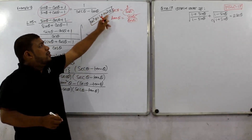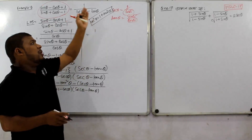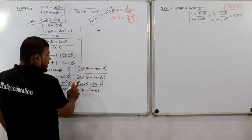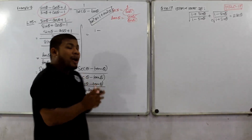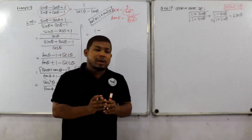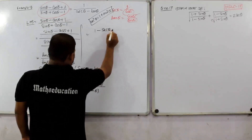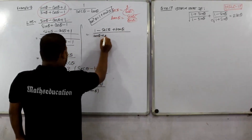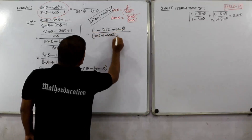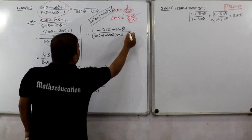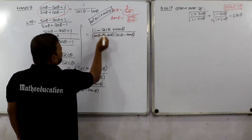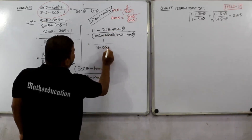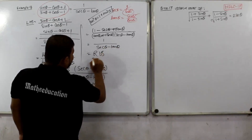With tan theta, tan squared theta, and minus 1 terms applied, finally the denominator simplifies. The final result is: 1 divided by sec theta minus tan theta. After cancellation, the quantity 1 divided by sec theta minus tan theta is our right-hand side. This proves question number 17.